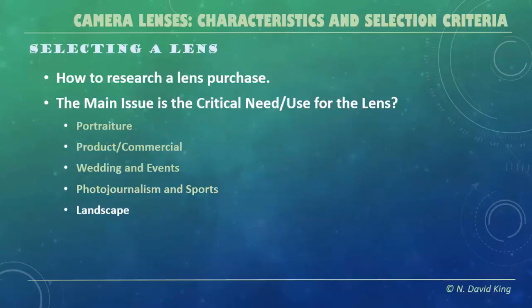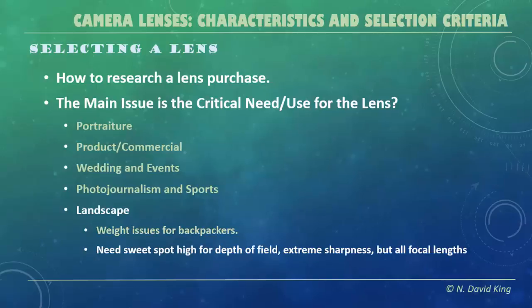How about landscape? Weight can again be an issue if you're going to be backpacking. If you're always working out of your car, weight is irrelevant. But if you're putting this stuff in a pack and carrying it around, the weight of those lenses adds up quickly. You need a sweet spot that's fairly high so you can get the sharpest image with a fair amount of depth of field. Fast lenses are not your friend in the landscape world. Sometimes you can even use tilt-shift lenses because of depth of field issues.